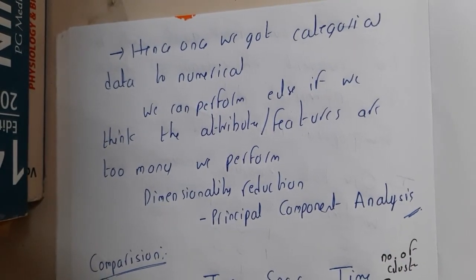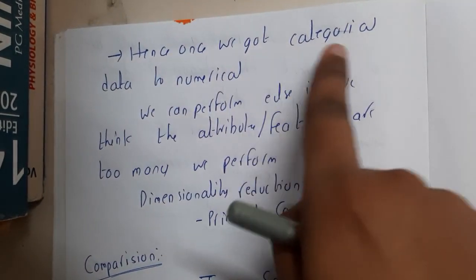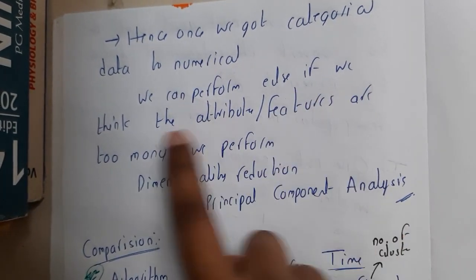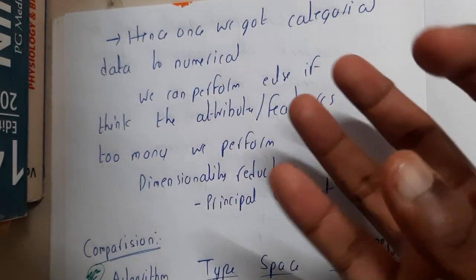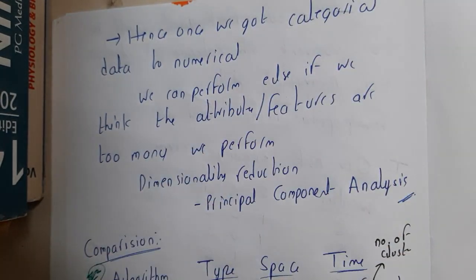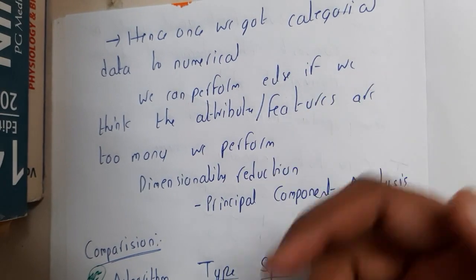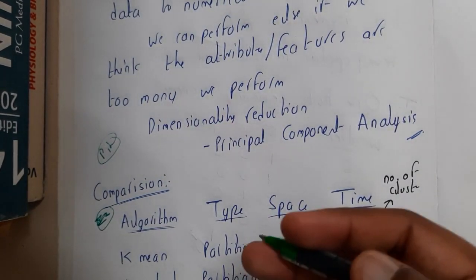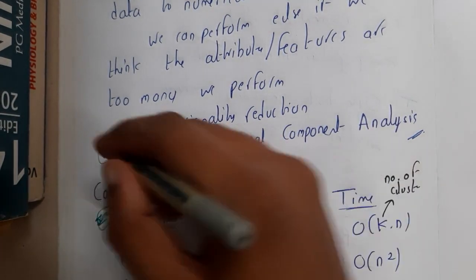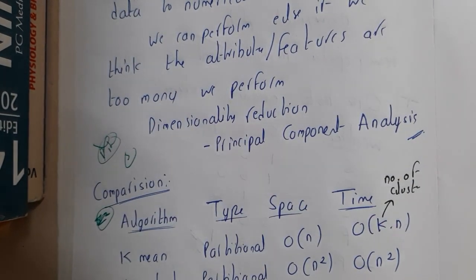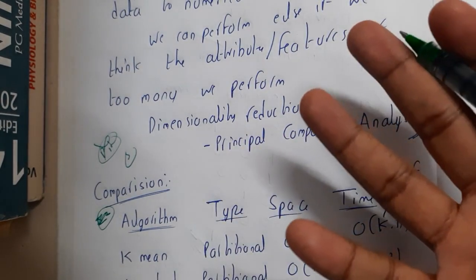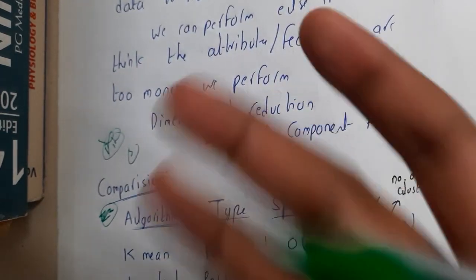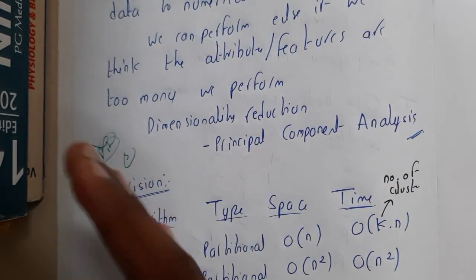Hence, once we got the categorical data to numerical data, we can perform else if we want. But sometimes you will end up having multiple columns. Assume you are writing for states. We are having multiple states in India, or in US or somewhere there are even hundreds of states in a single country. Even in that situation, we will be ending up with too many columns.